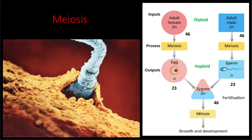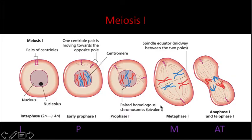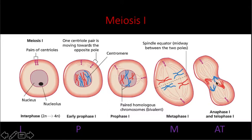So meiosis produces sperm and eggs, and mitosis allows us to grow and develop. Meiosis comes in two stages. Meiosis 1 is very similar to mitosis — I've got the same acronym IPMAT: interphase where the DNA is duplicating, prophase when chromosomes are condensing and becoming visible, metaphase when they're lining up along the equator, and anaphase and telophase when they're being pulled apart by the spindle fibres and one cell pinches in the middle and turns into two cells.